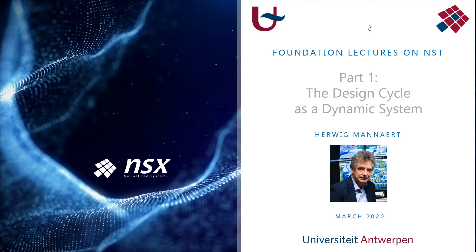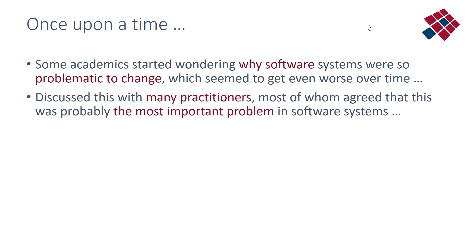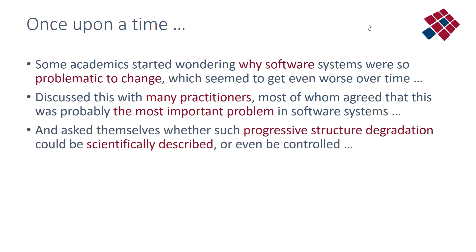Research on Normalized Systems Theory started a little more than 10 years ago when my colleague and myself started wondering why software systems were so problematic to change — and which seemed to get worse over time. We discussed this with many practitioners, and most agreed this was probably the single most important problem in software systems. So we asked ourselves whether such progressive structure degradation could be scientifically described, and maybe even controlled.